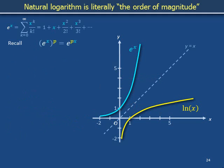We have defined the natural logarithm as the inverse of the exponential. This means that the natural logarithm is basically the order of magnitude. Here's how.